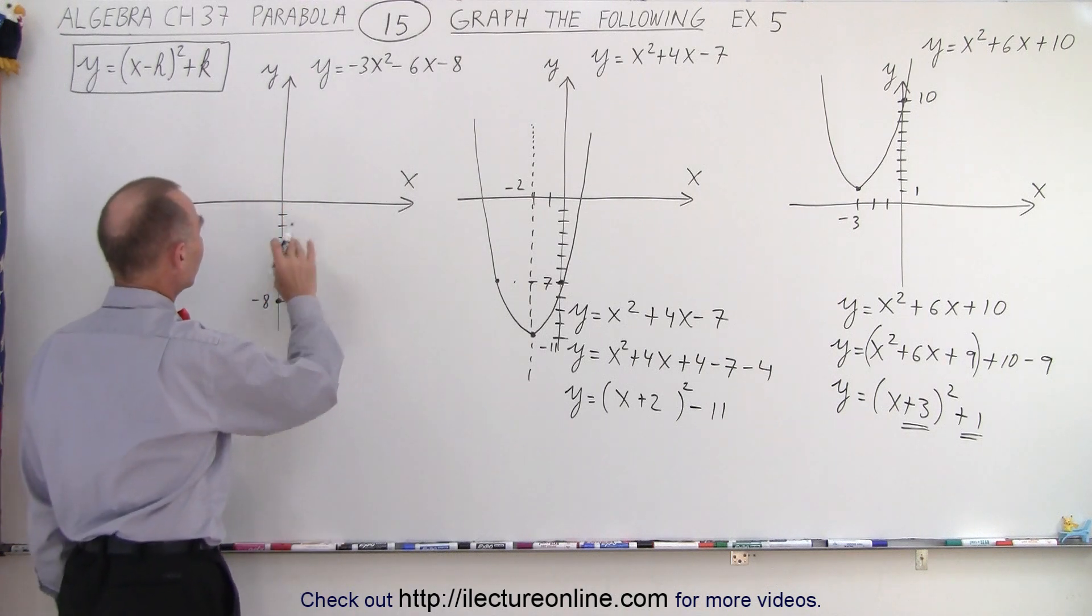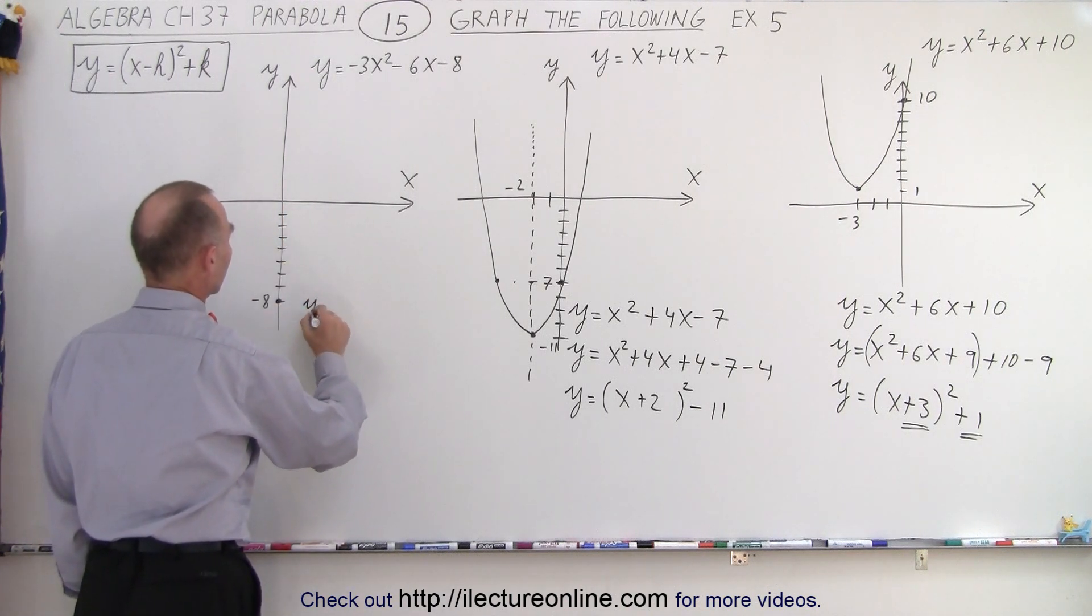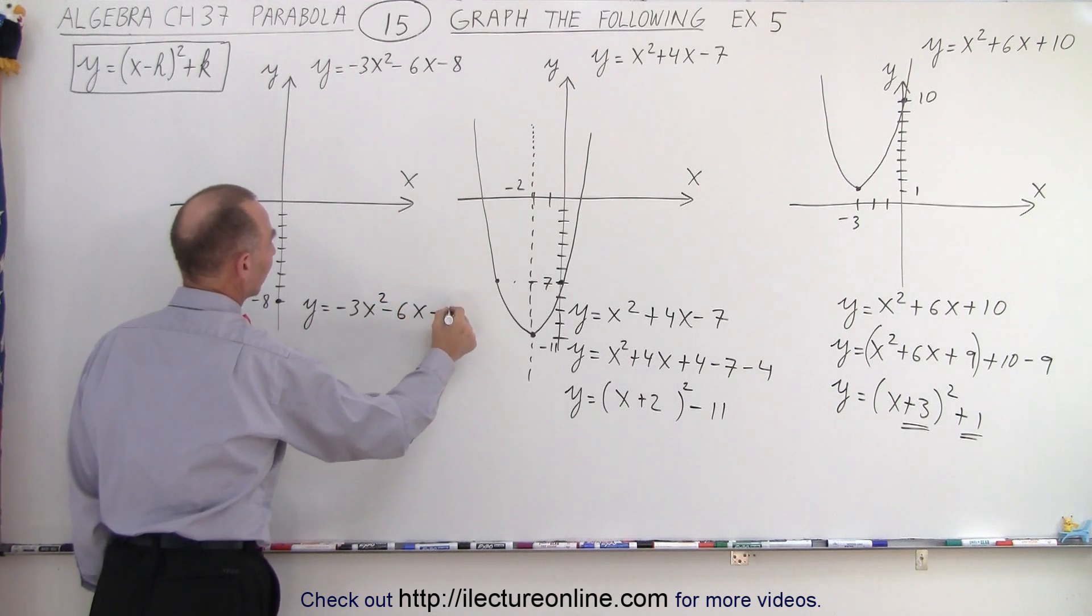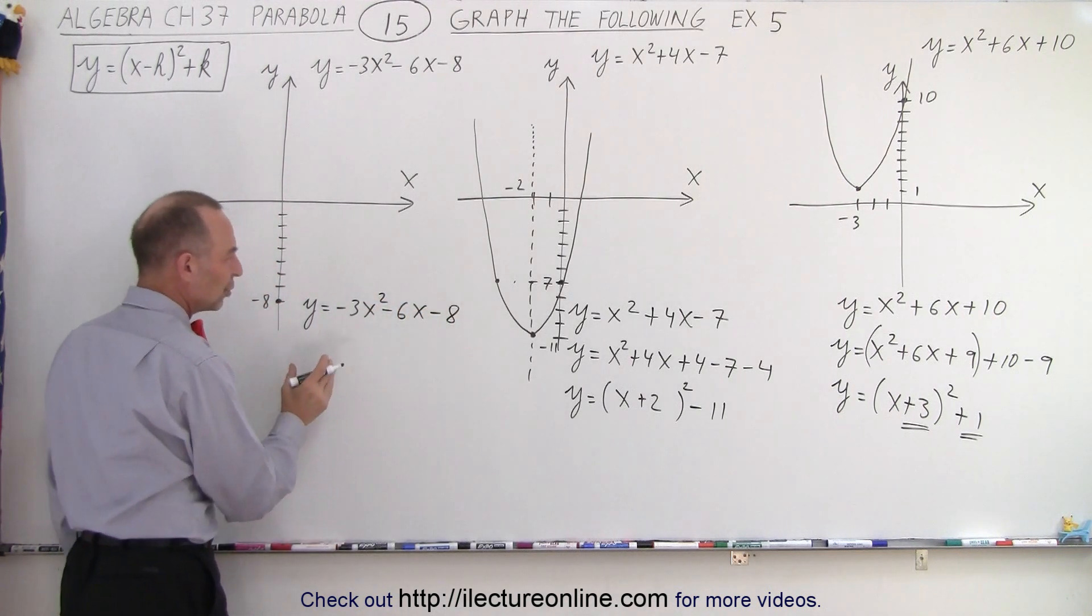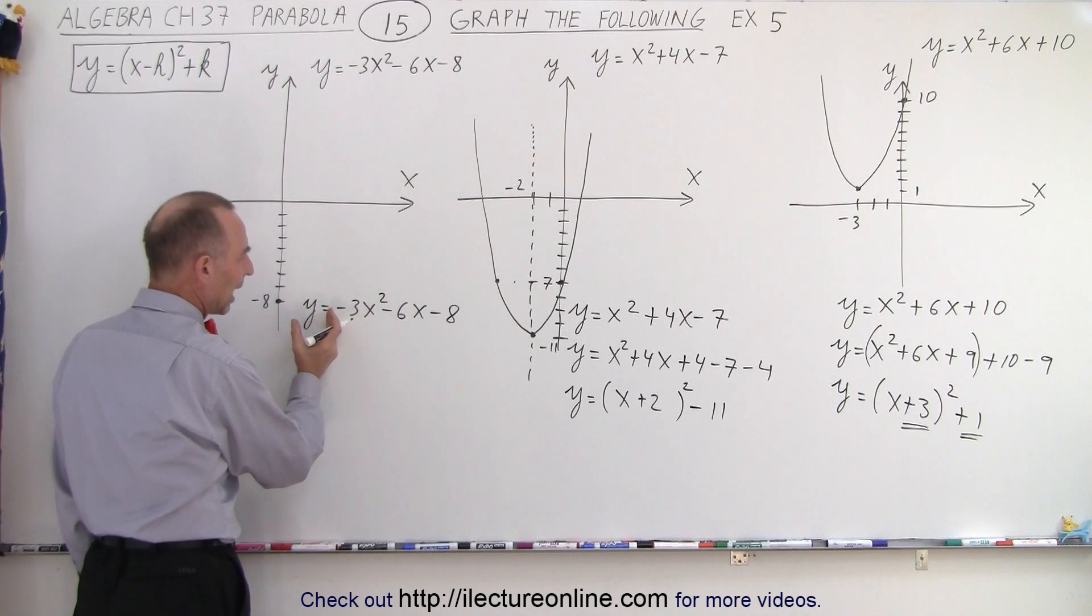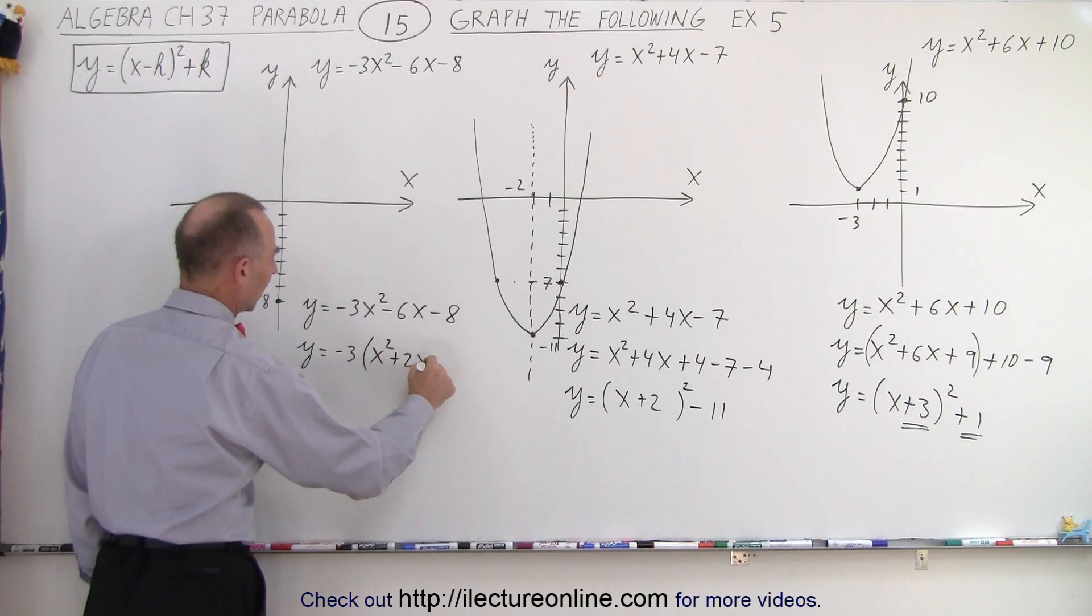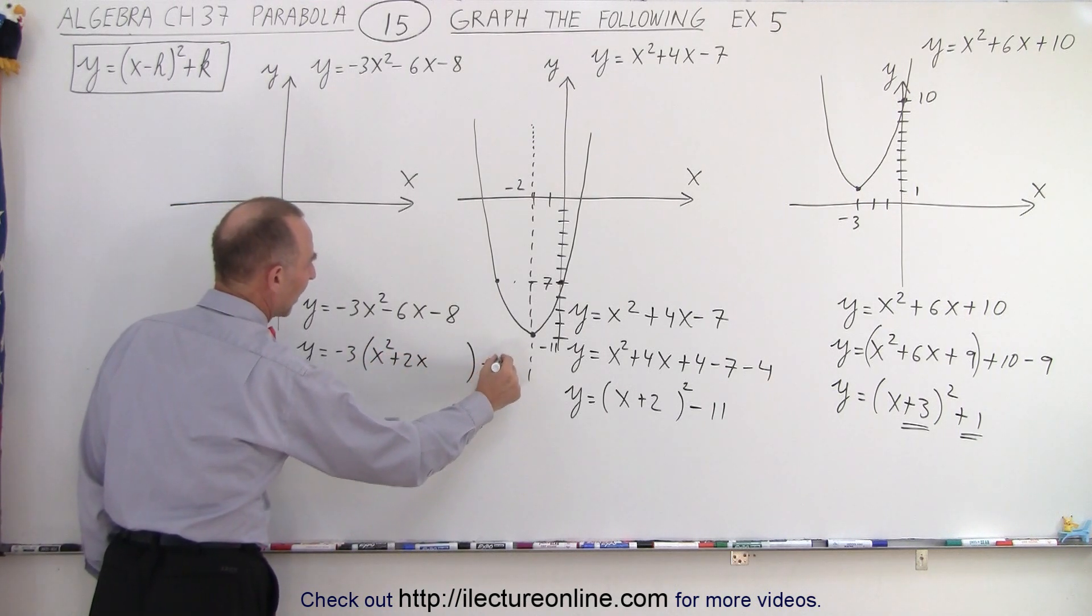Let's work on this one here. We have y equals negative 3x squared minus 6x minus 8. The first thing I want to do is pull the negative 3 out. So this is y equals negative 3 times x squared plus 2x, leave some room, minus 8.